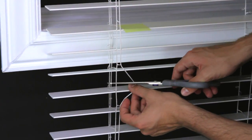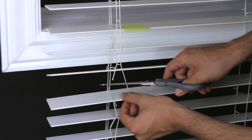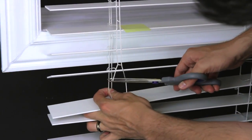Cut the ladder strings about six inches below the last slat, then cut the lift strings off at the same point.